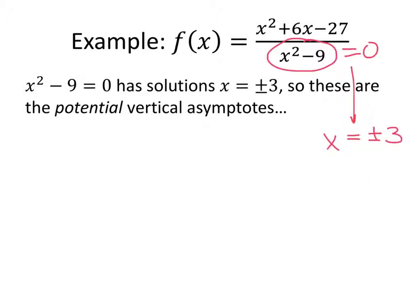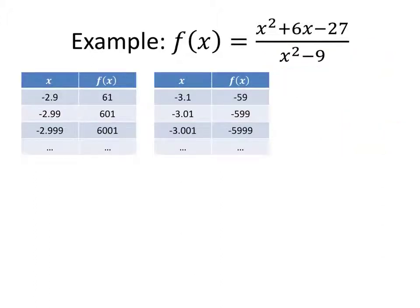So those are the places where we might have asymptotes — but do we actually have asymptotes there? One way to answer this is to make a table of values. Starting with x equals negative 3, we plug in values getting closer and closer to negative 3 from both sides. From values just greater than negative 3, our y values are getting bigger and bigger, and from values just less than negative 3, our y values are going towards negative infinity.